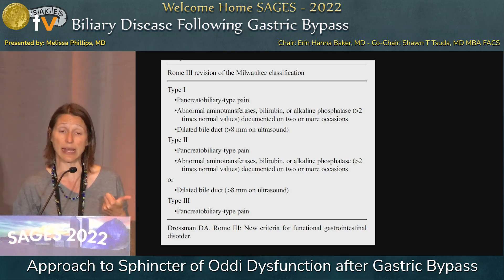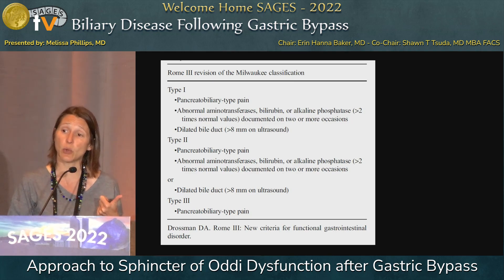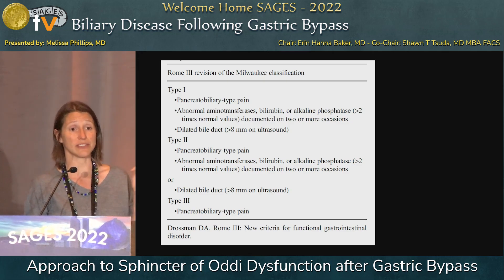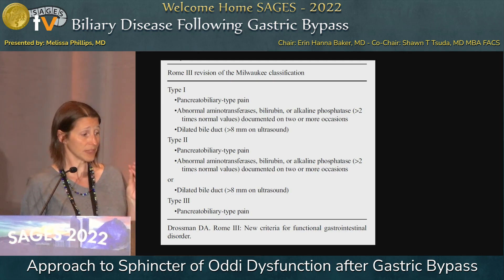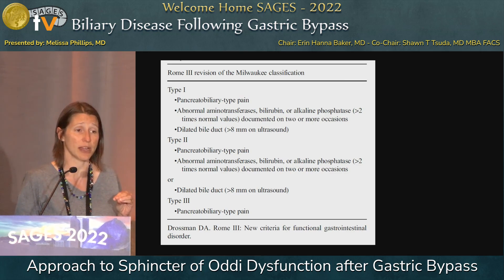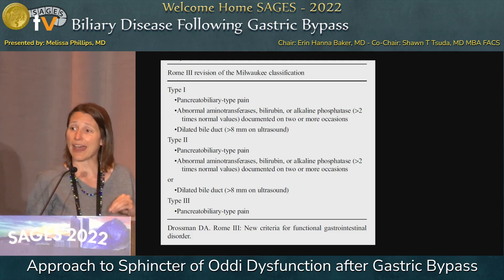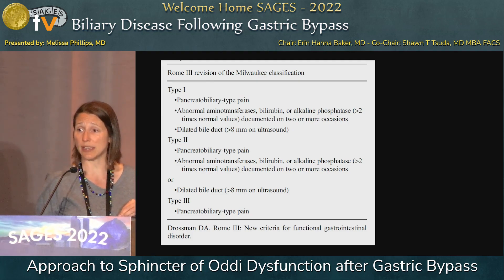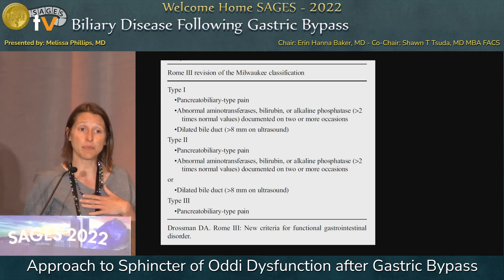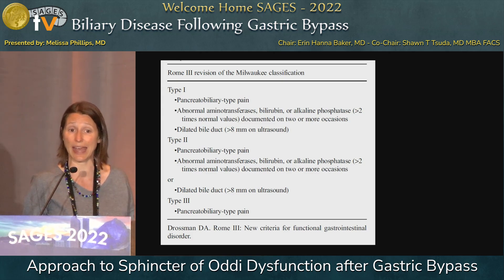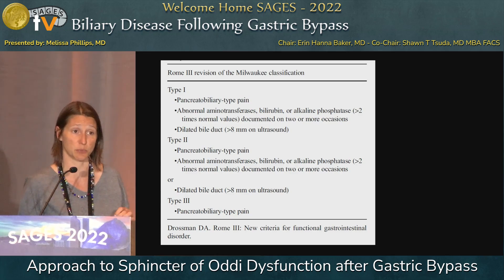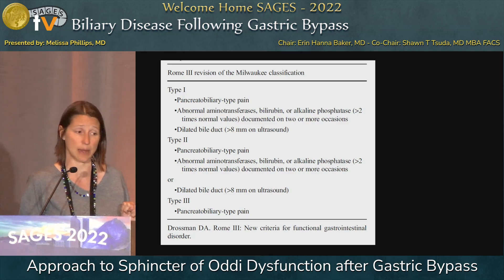Type 2 is that you've got the classic pain symptomatology on the Rome 3 criteria, but you only have one or the other — either abnormal LFTs but not a dilated duct, or a dilated duct but normal liver function tests. Type 3 I honestly struggle with because they only have pain symptomatology, and pain symptomatology is quite a tricky area because there are so many other things in the world of just pain. I prefer personally to treat only the type 2 and type 1 categories where there is an objective abnormality.